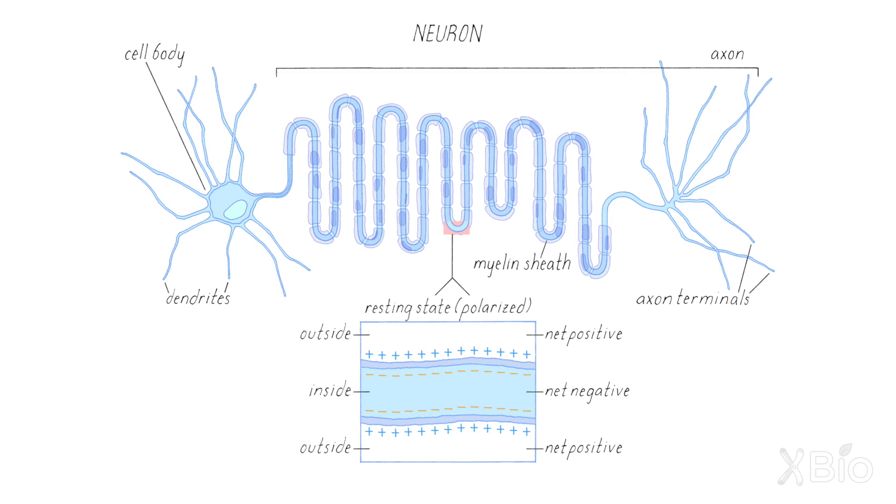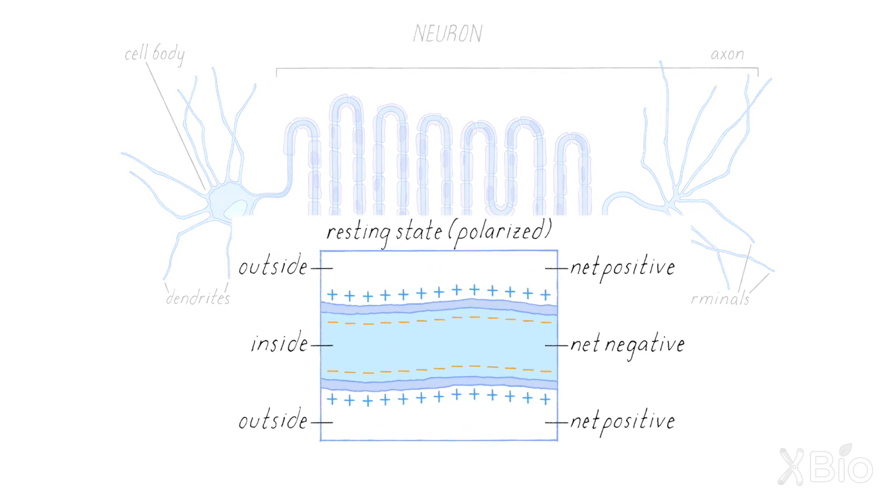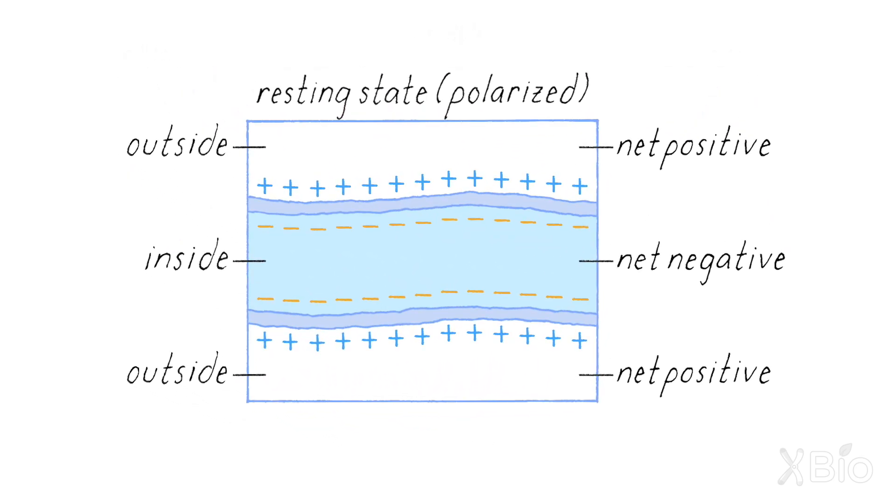Neurons can produce electrical impulses called action potentials that travel extremely quickly through the cell. On the inside of a neuron, there are fewer positive ions than on the outside. Ions are charged particles — atoms that have either gained or lost an electron. This means there are more charged particles on one side than the other, so the outside of the cell is positively charged compared to the inside.